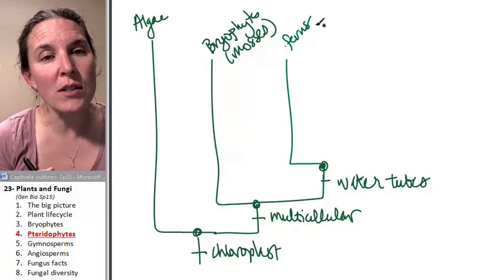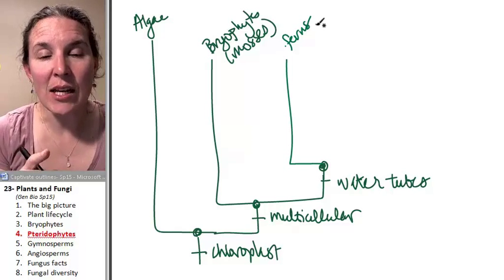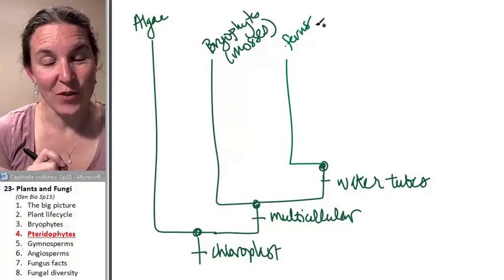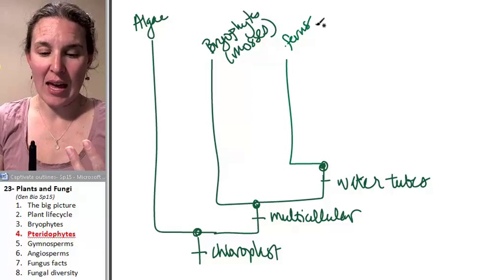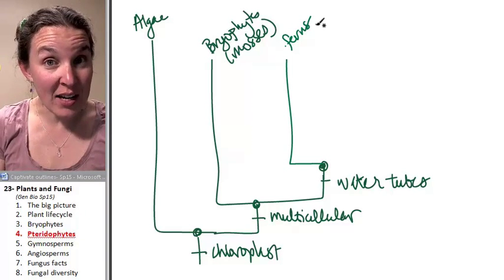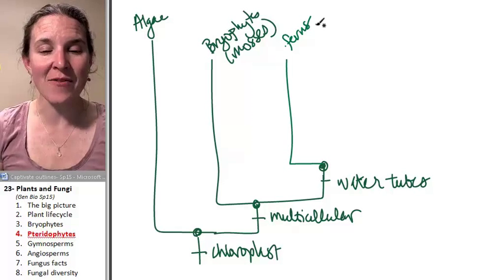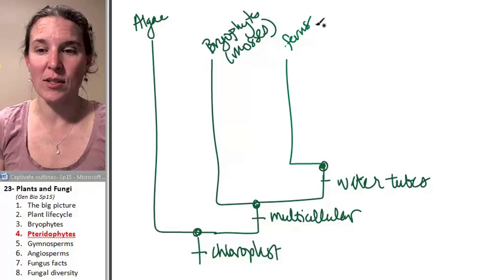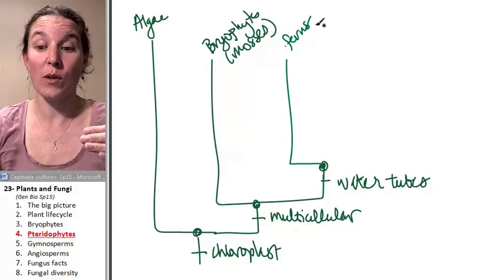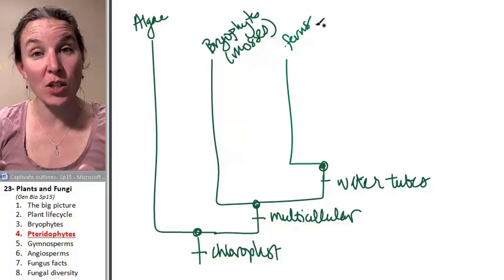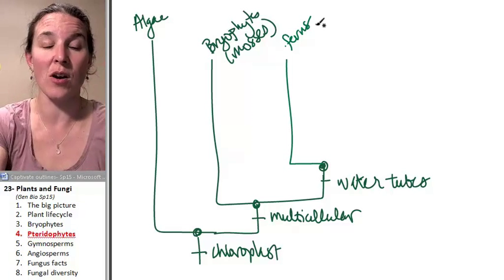Ferns still need water to make their babies. They can get bigger and live in drier areas, but if they want to reproduce they have to have rain or some kind of wet flood that will allow their sperm to swim and find the eggs.